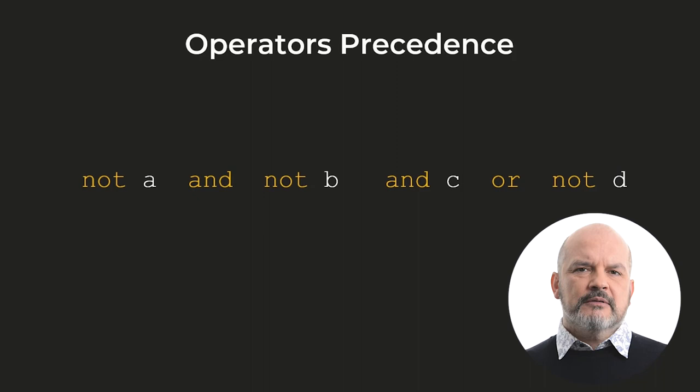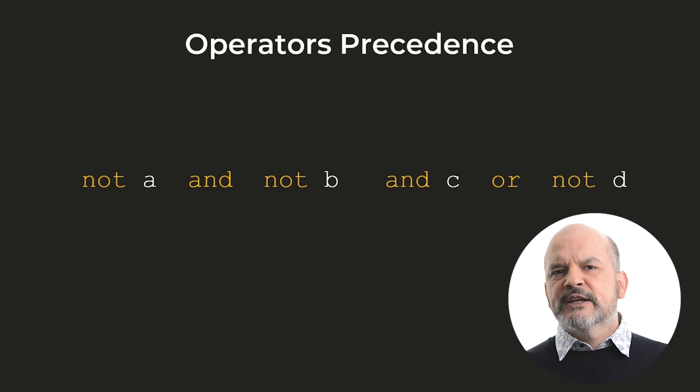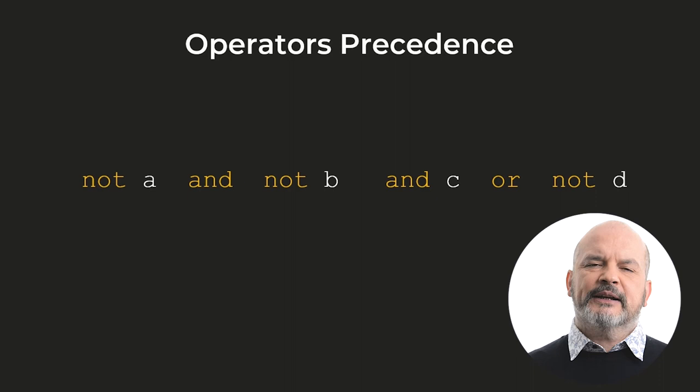Clever use of the evaluation order enables developers to write more concise and clearer code. Now, let's consider the expression NOT A and NOT B and C or NOT D. Using operator precedence on the values for A, B, C, and D, there is no ambiguity in the final result.